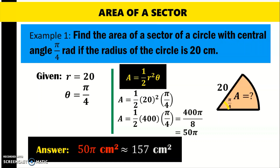If you give pi a value of 3.14 and multiply it by 50, the approximate value of 50 pi is 157 square centimeters.